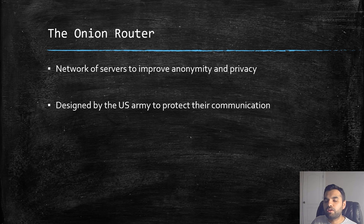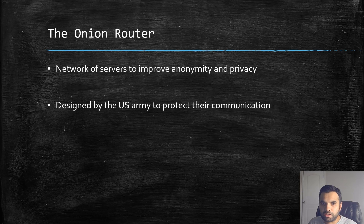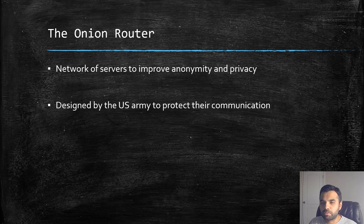Whenever we talk about being private and anonymous, the main thing that comes to mind is the onion router — it's called Tor. Tor is a bunch of network servers designed to improve anonymity and privacy. You may have used the Tor browser at various points in your career, so it might not be new to you. I'll give you a brief overview of how Tor works, and in the following episodes we'll talk more about how to use it. Tor is essentially a network of servers to improve anonymity — a bunch of servers made to keep yourself anonymous.